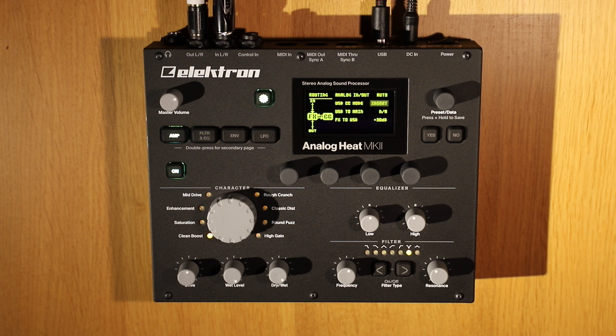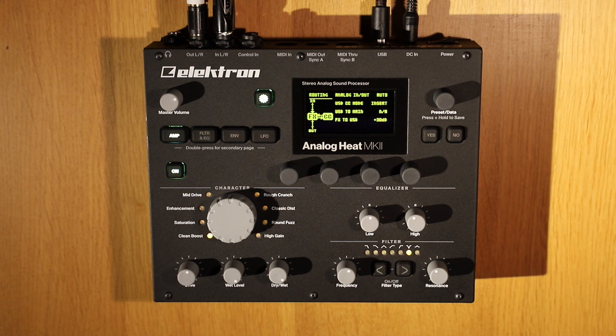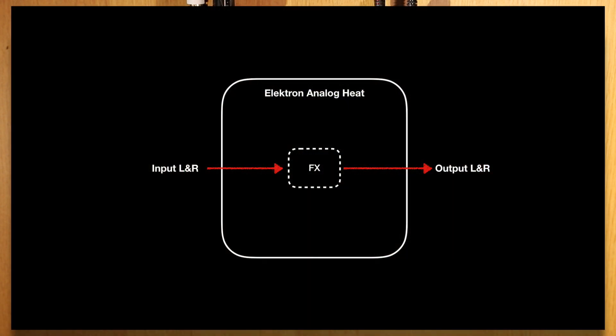Let's start with the default mode, which is called insert, and leave the analog switch to auto — more about this later. Before we start with some examples, just a quick explanation on how the audio is being routed. In this picture we see the Analog Heat with its built-in inputs and outputs. The red arrows mean stereo analog audio coming from the input, being run through the analog effects, and ending up on the output.